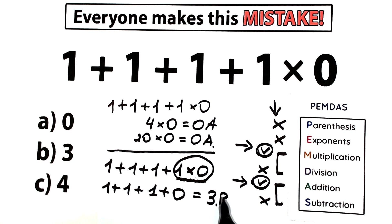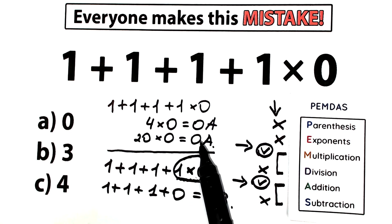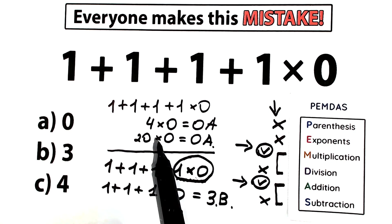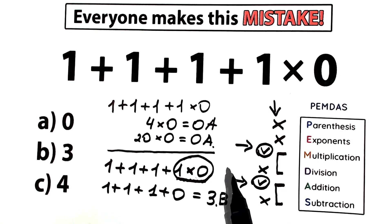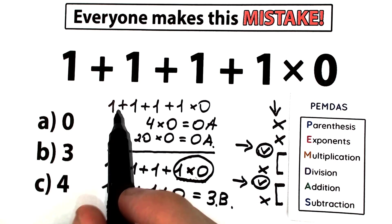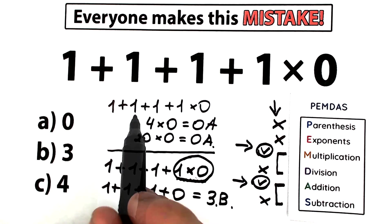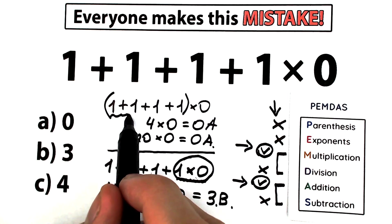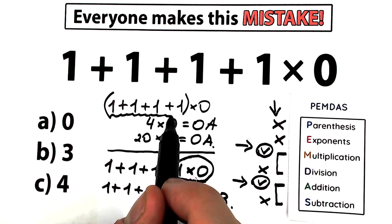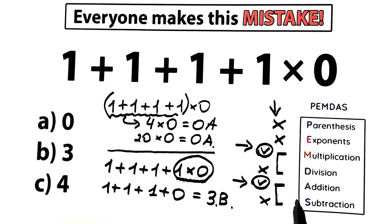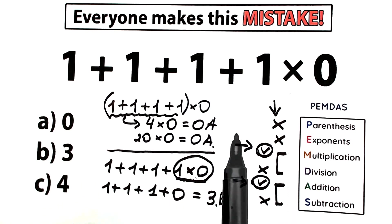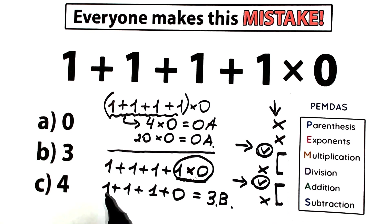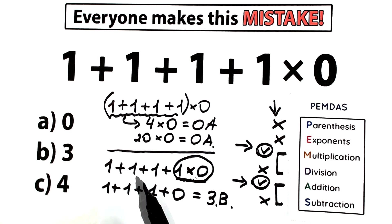So the correct answer according to PEMDAS is 3. As you can see, the solution that gave 0 is absolutely wrong. That solution would be correct if we wrote brackets — then we start from the parentheses and the correct answer would be 0. But in our case we don't have any parentheses, so multiplication first, then addition.